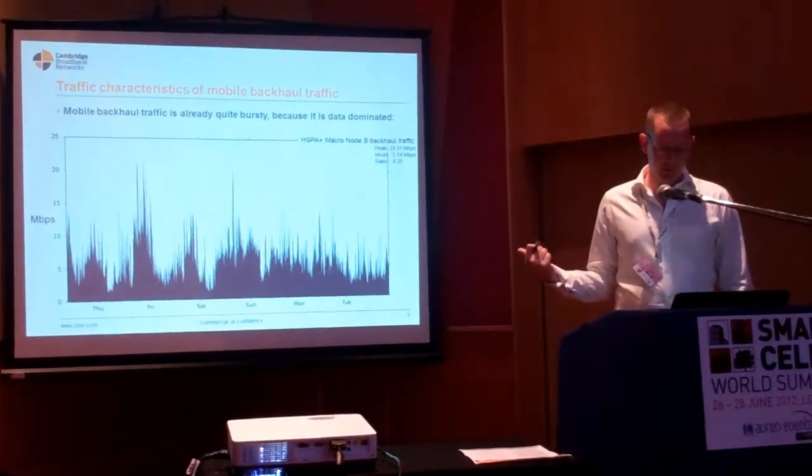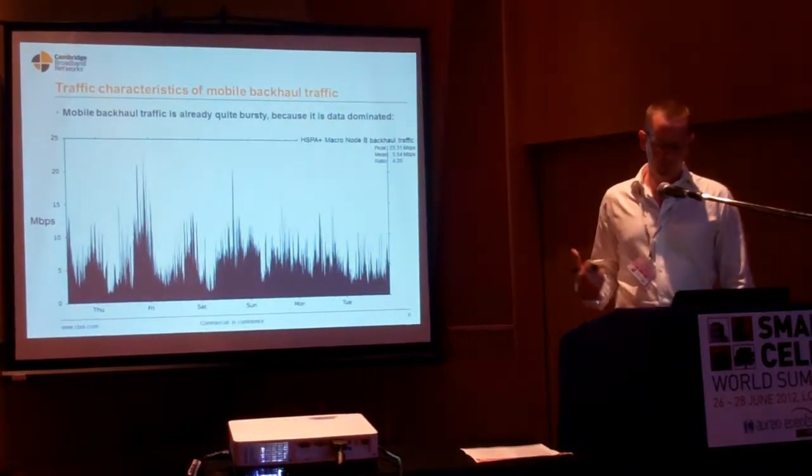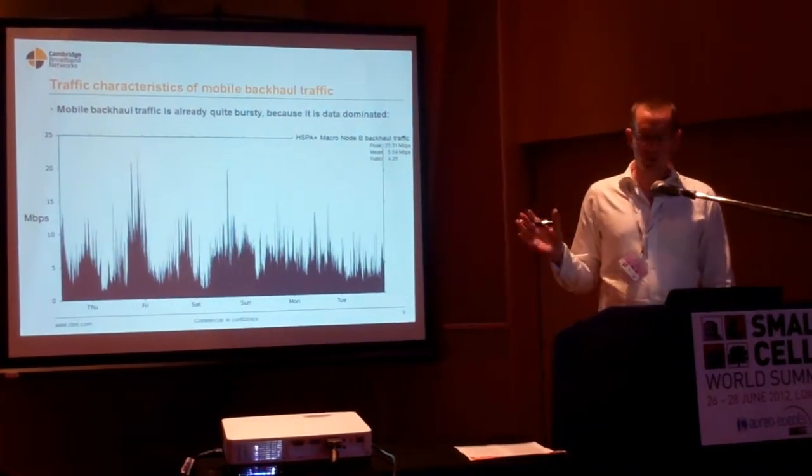Finally, there's the shape of the data. Because you're aggregating fewer UEs than in a macro environment, the shape of the data changes. For a typical macro cell you might have a four-to-one peak-to-mean ratio on average, whereas for small cells the estimated average in a mature network will be about ten-to-one, and in trials we've done the average is currently not much higher than that.